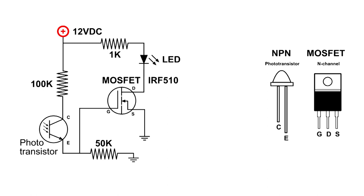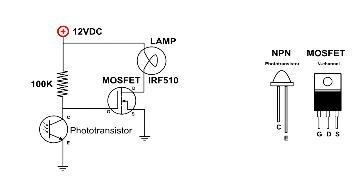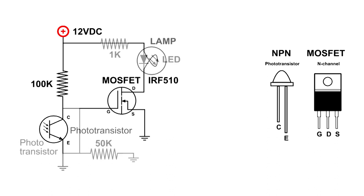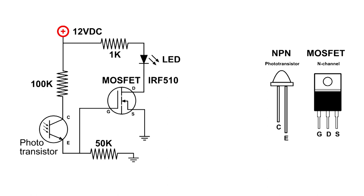Notice the difference in the circuit. In the first circuit, the gate is hooked up to the collector. In this new circuit, the gate is hooked up to the emitter. Between those two points it is 180 degrees out. When the phototransistor is in darkness it's like it's not in the circuit, so the gate is grounded. When the phototransistor is in light it's pretty much just a wire, and there's enough voltage coming from the 12-volt power supply through that 100k ohm resistor to turn on the MOSFET.